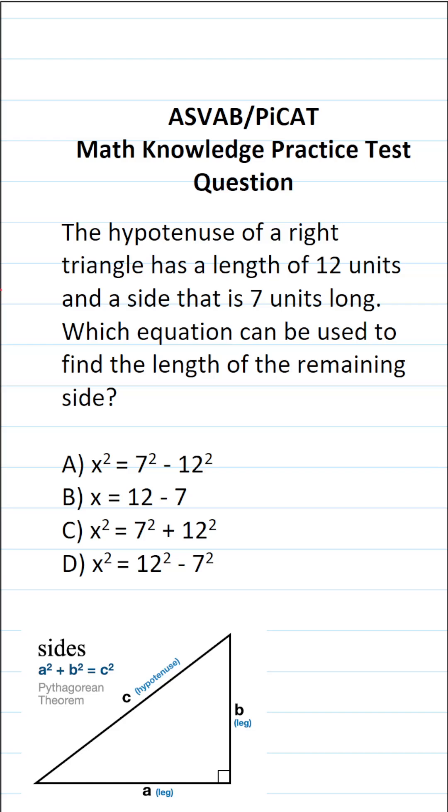This math knowledge practice test question for the ASVAB and PiCAT says the hypotenuse of a right triangle has a length of 12 units and a side that is 7 units long. Which equation can be used to find the length of the remaining side?